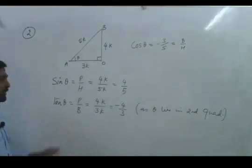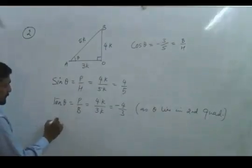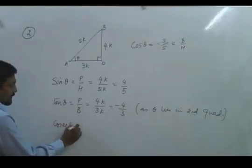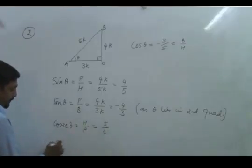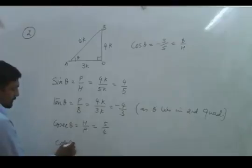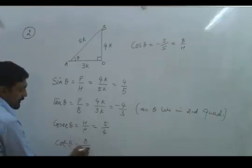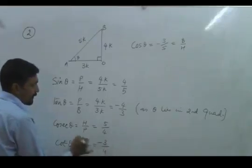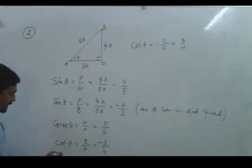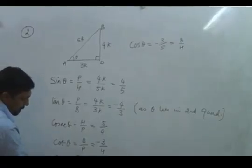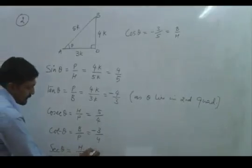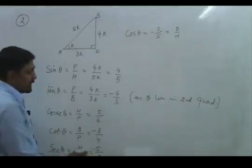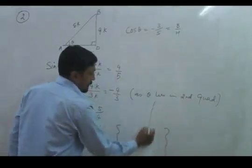As theta lies in second quadrant, similarly we find the other t-ratios. Cosec theta is H upon P, that is 5k by 4k. Cot theta is B upon P, that is 3k upon 4k, but with negative sign because of the quadrant. And the last, sec theta, is hypotenuse upon base, that is 5 upon 3 with negative sign.